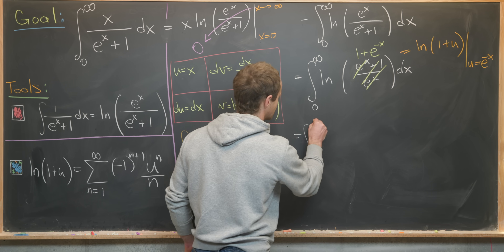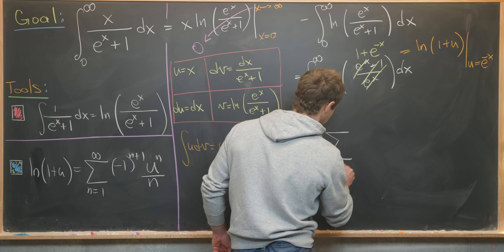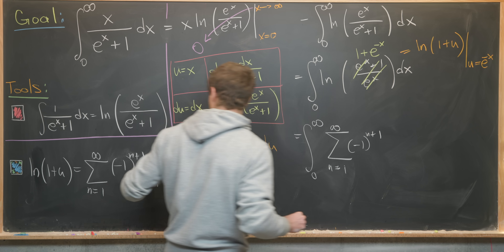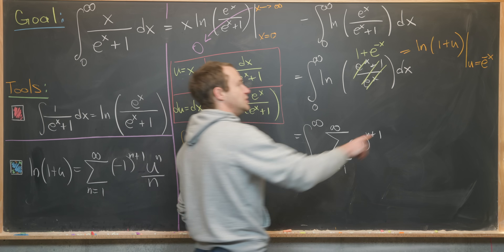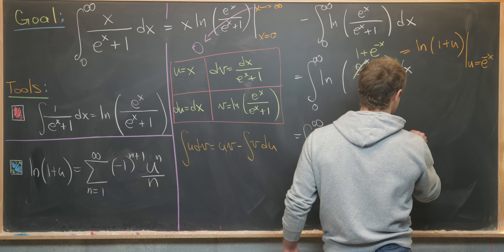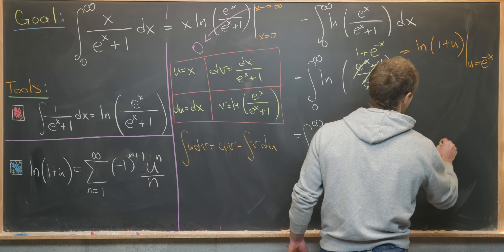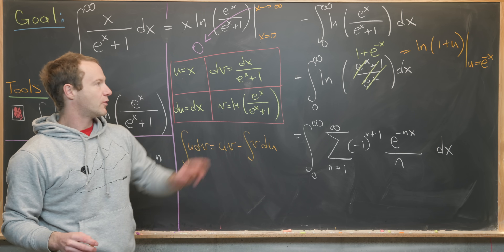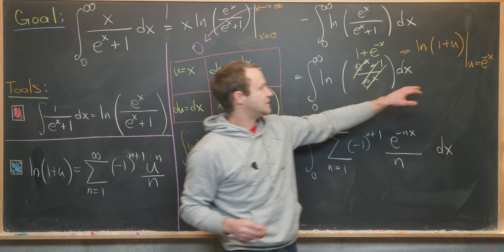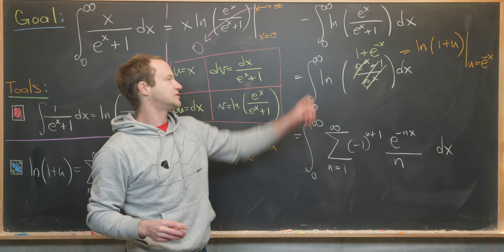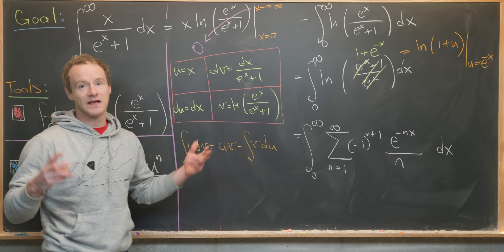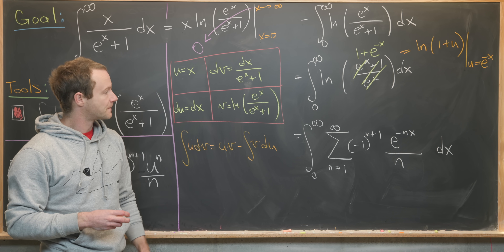We apply our second tool to change it into a series. We have the integral from zero to infinity of the sum as n goes from one to infinity of minus one to the n plus one times e to the minus nx over n, then dx. This series is valid because as x goes from zero to infinity, e to the minus x is always less than one — the endpoint is a set of measure zero and doesn't affect the integral.